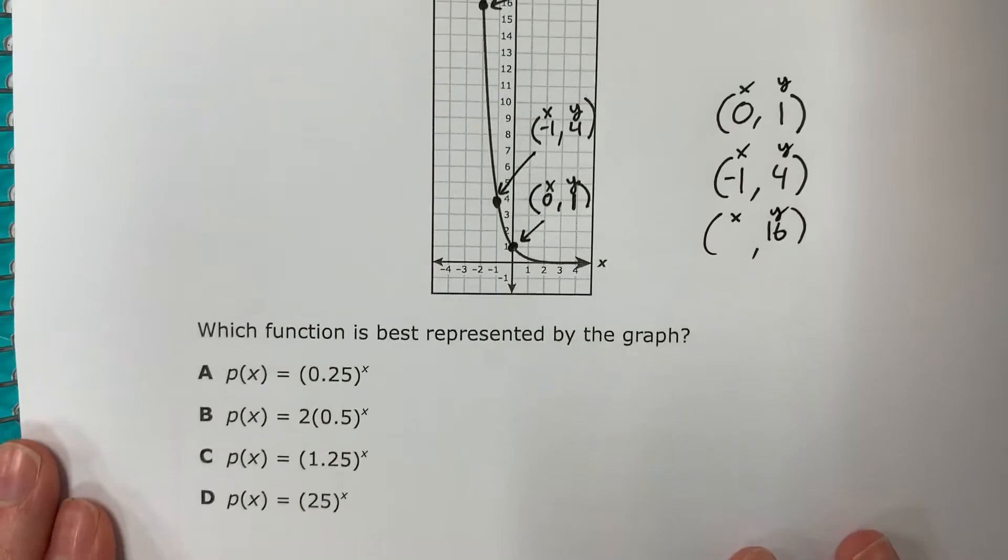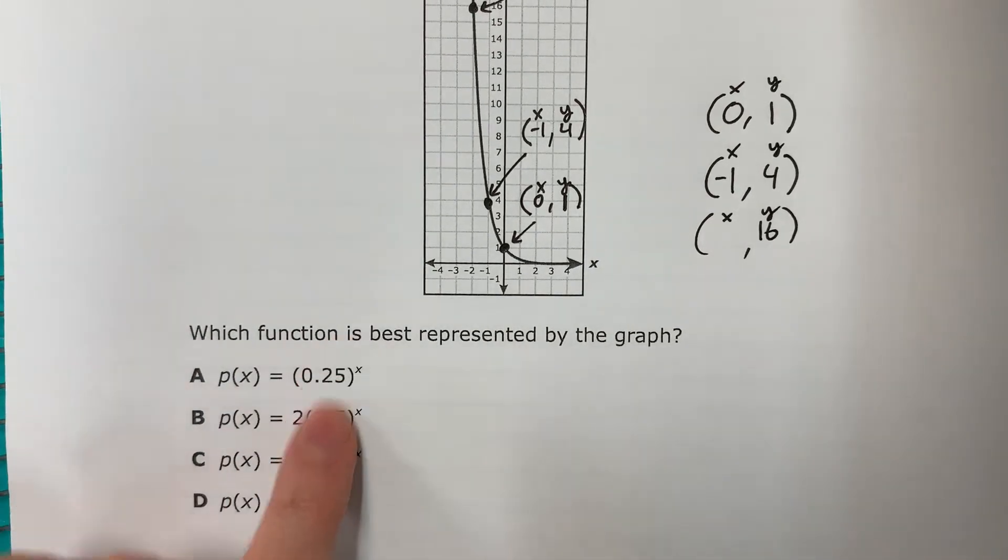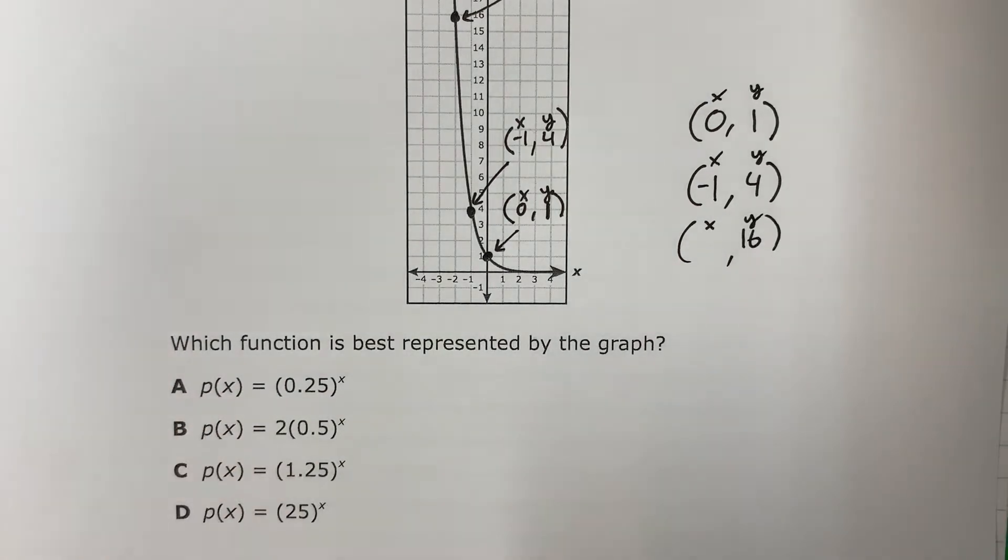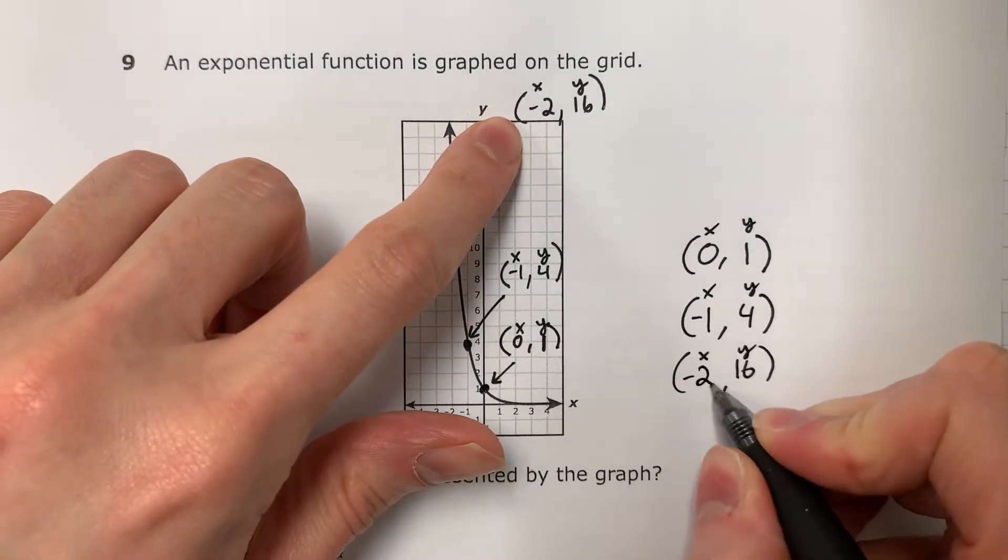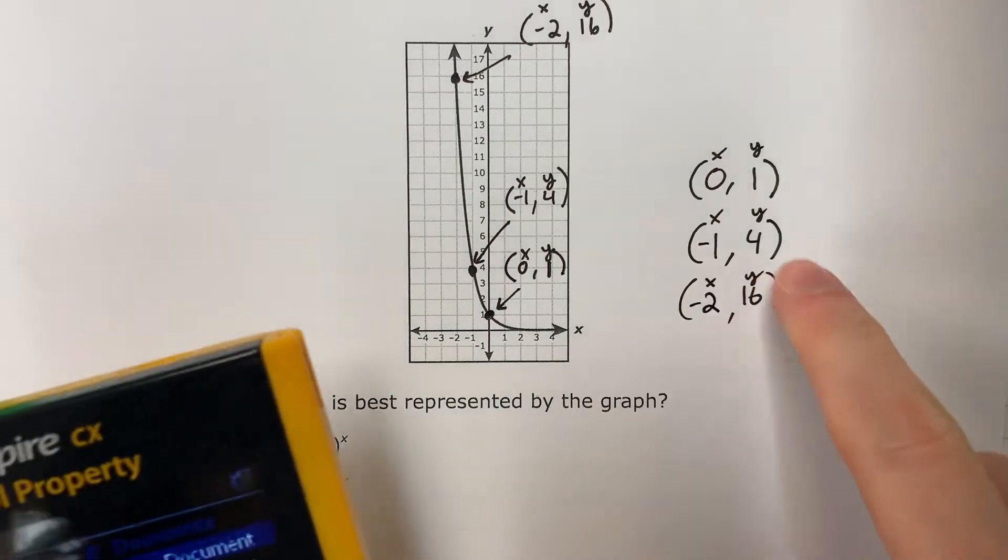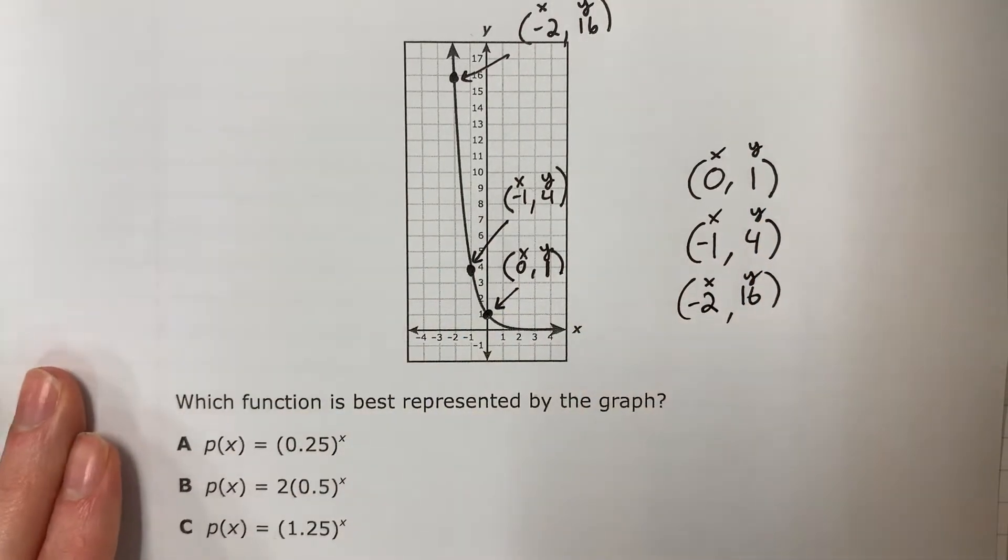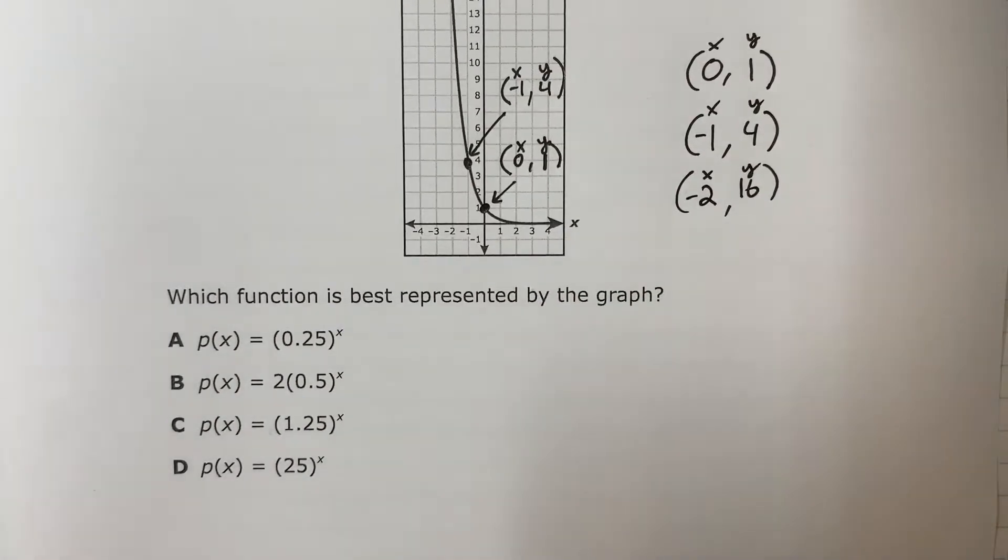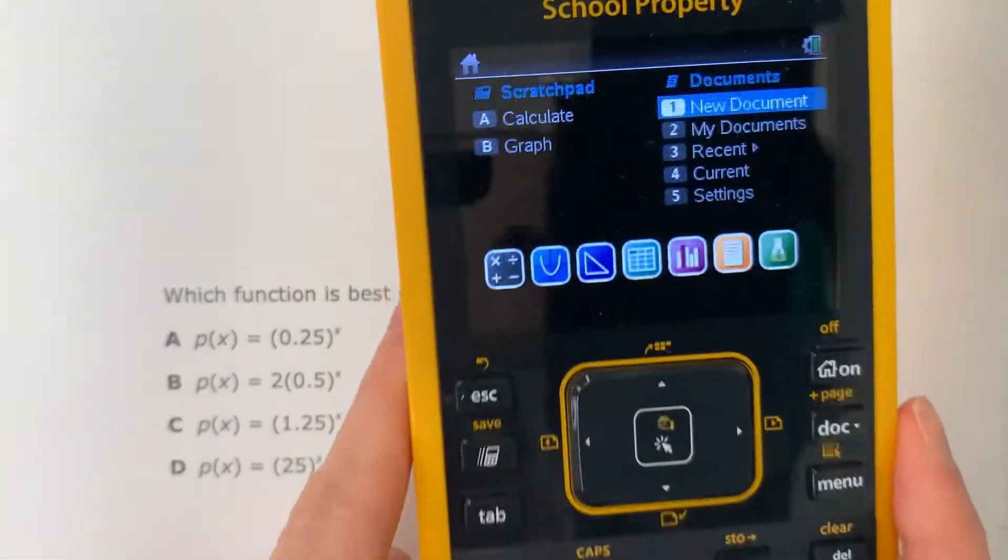So now what we're going to do is we're going to put these in the calculator, one by one, and we're going to make a table. And we're going to see which of these points are on the table. The table that has all three points is the correct answer.